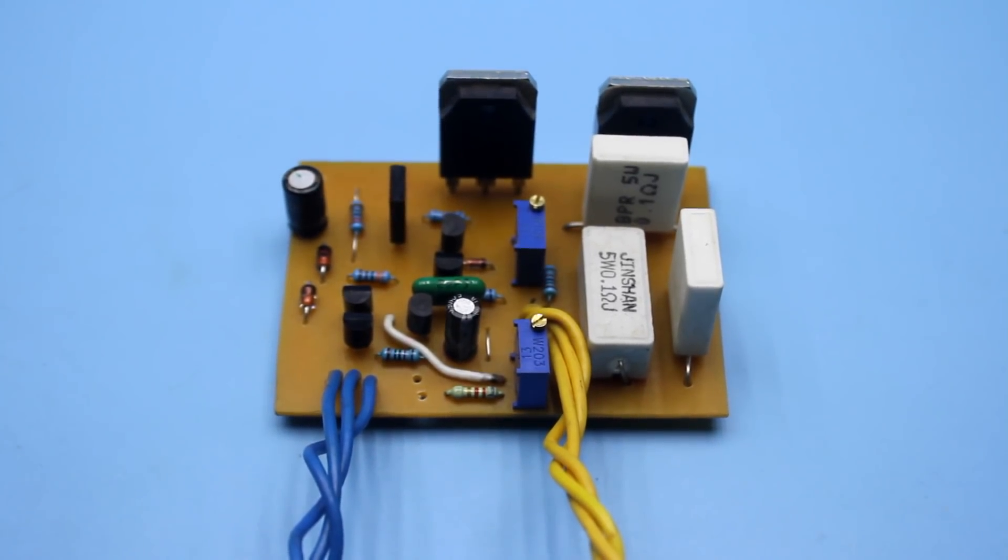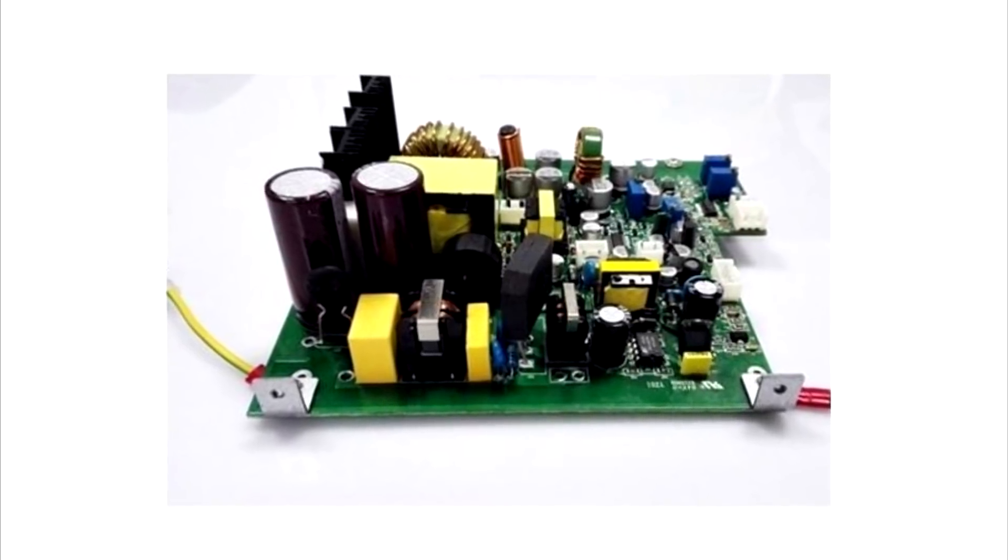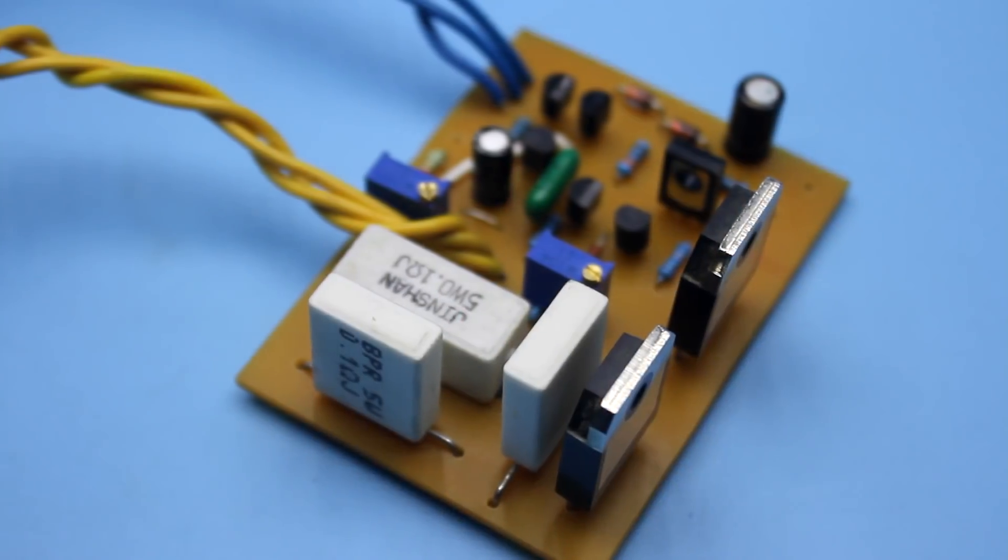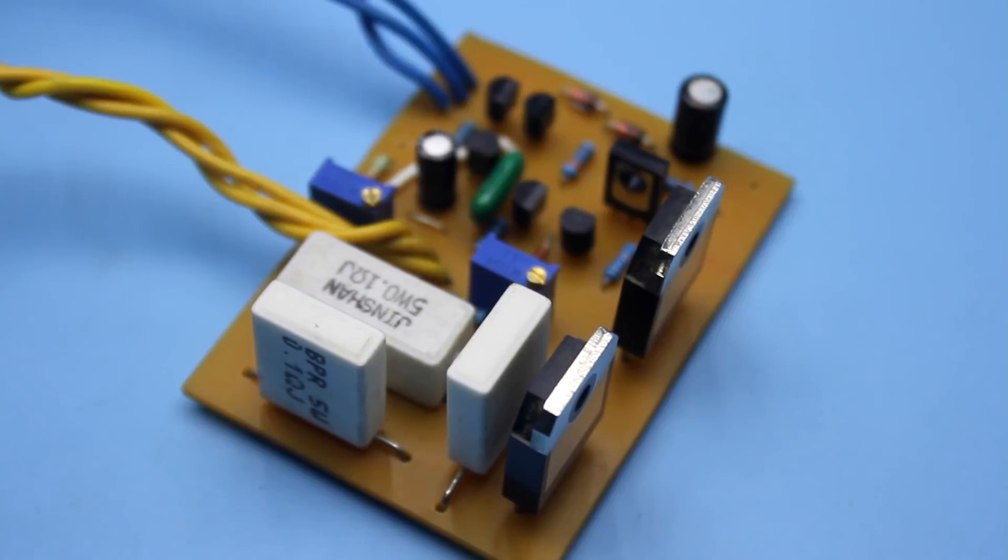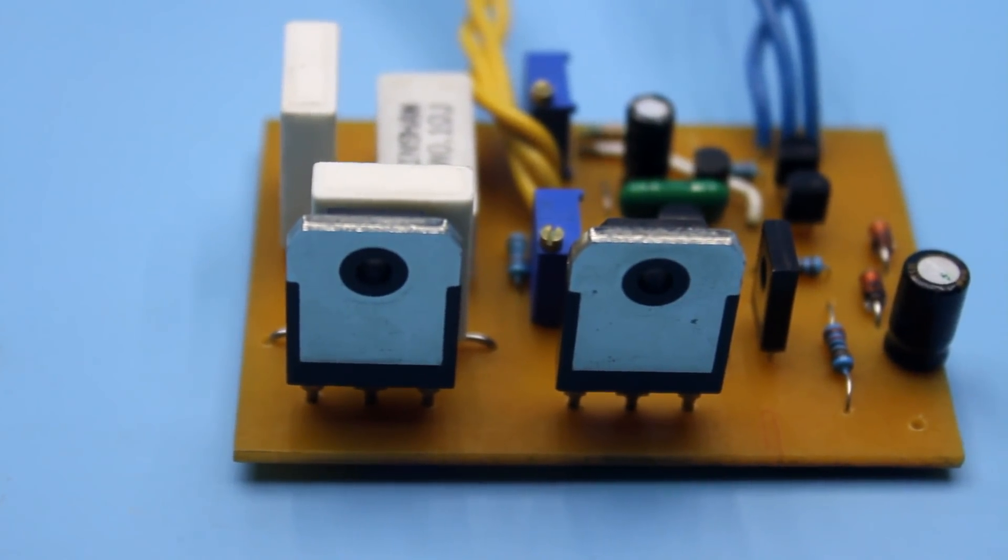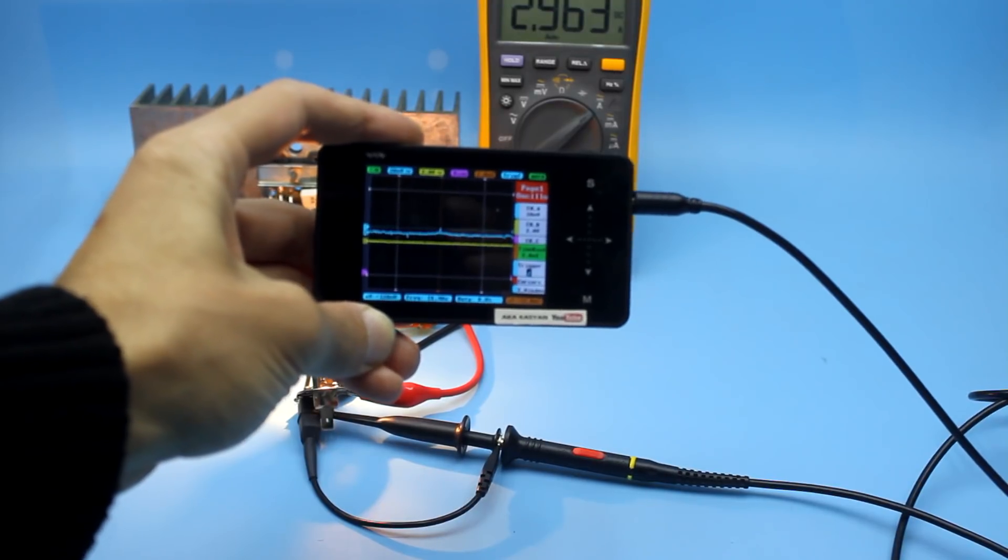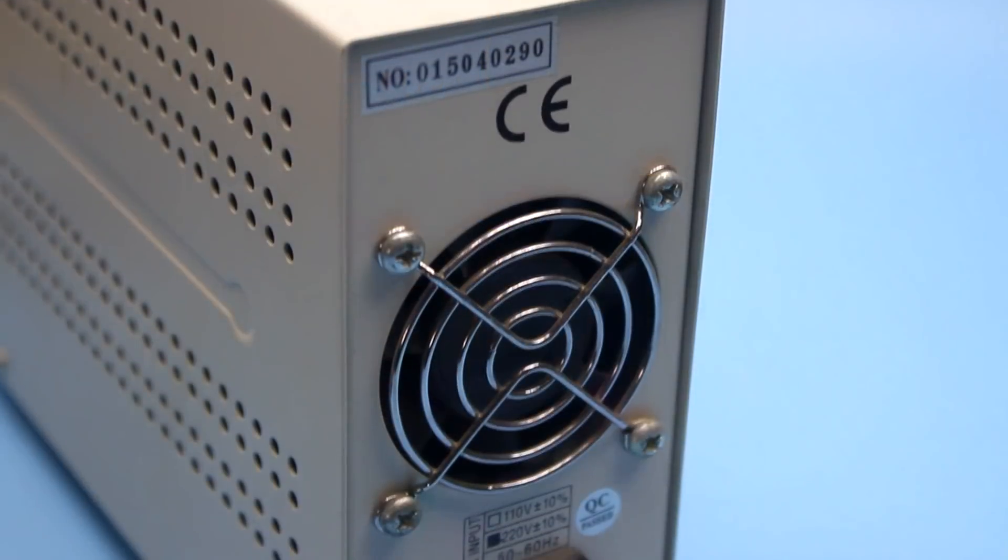Power supplies can be linear and pulsed. The main advantage of pulsed circuits is their high efficiency of 90 and more percent, whereas linear circuits have a low efficiency but provide a cleaner output voltage without any interference that is inherent in impulse power supplies.